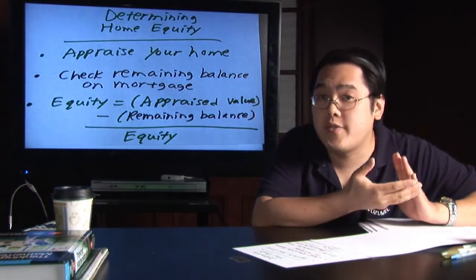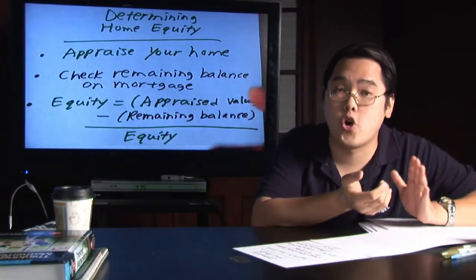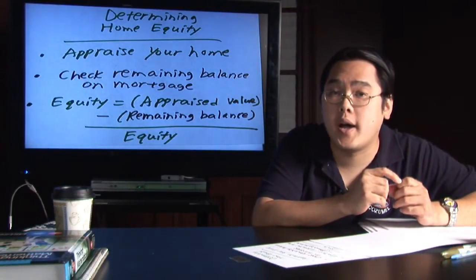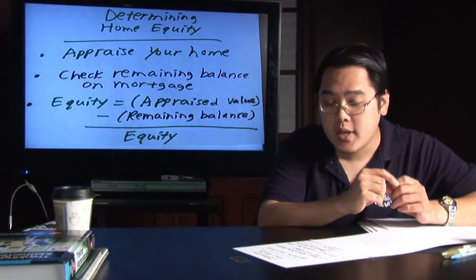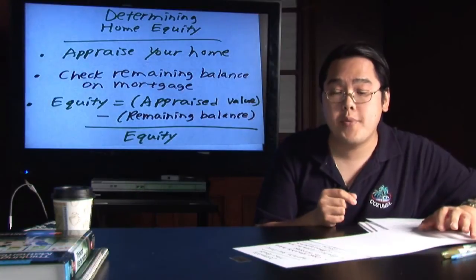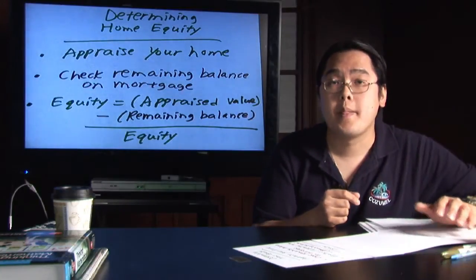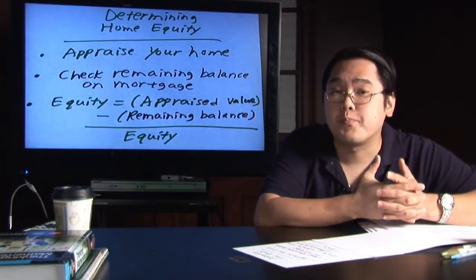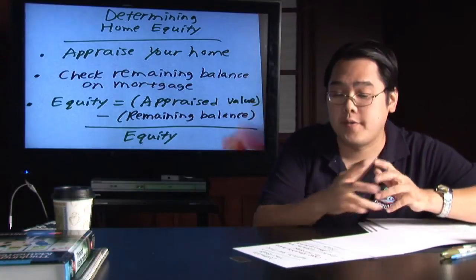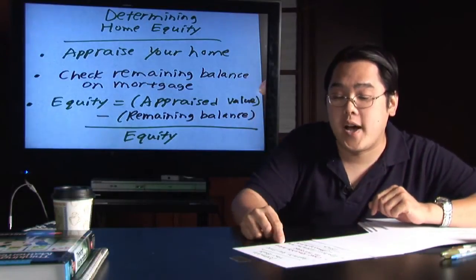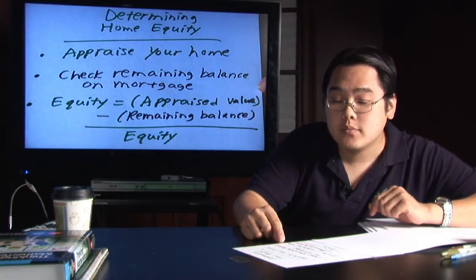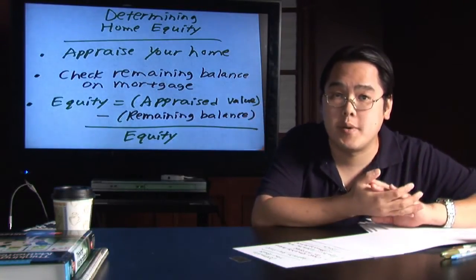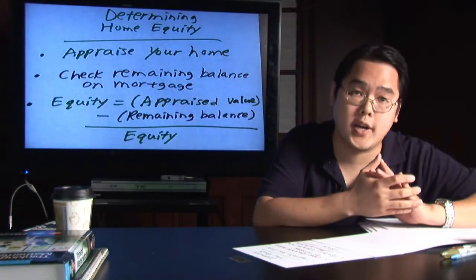You're going to take the appraised value — how much your home is worth — and you're going to subtract it by the remaining balance. The number that you get is going to be the equity in your home. If you subtract your remaining balance from the appraised value and you get a positive number, you have positive equity.